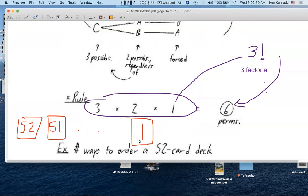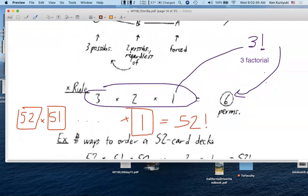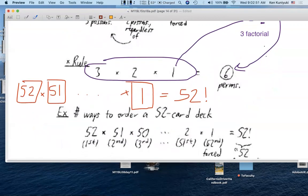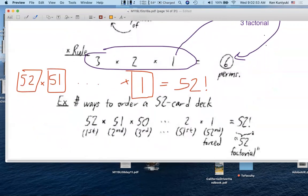So, the number of full permutations of the 52-card deck of cards is 52 times 51 times da-da-da times one, also known as 52 what? 52 factorial. 52 times 51 times 50 times da-da-da times two times one. We get 52 factorial.